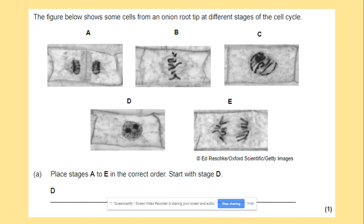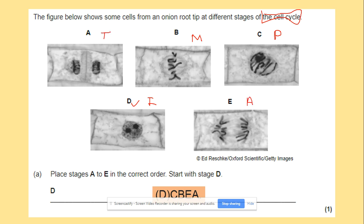Here is a past paper question where we need to order the stages of the cell cycle starting with D. D shows chromosomes not visible — that is interphase. Then C shows prophase with visible chromosomes. Then B shows metaphase, chromosomes lined up at the centre attached by spindle fibres. Then E shows anaphase where sister chromatids separate. Finally A shows telophase.